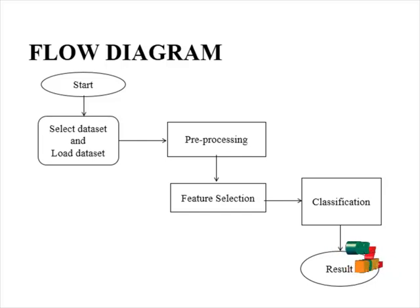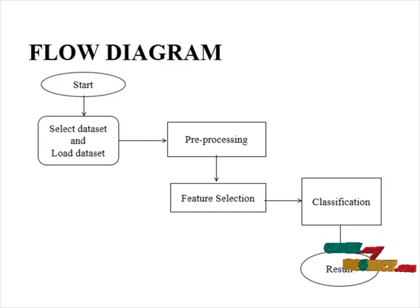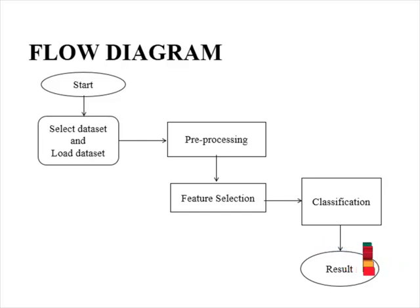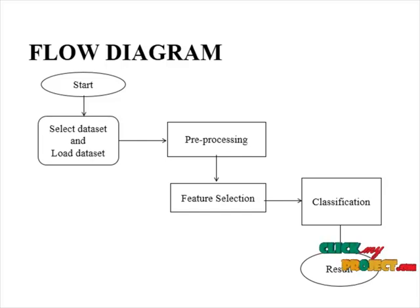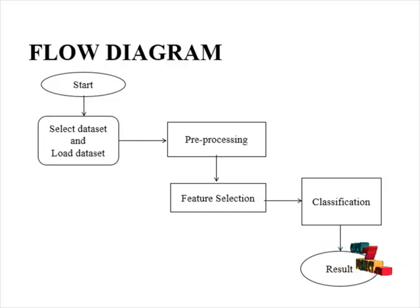In pre-processing we need to clean our dataset. In the cleaning step we need to check for missing values or null values in our dataset. If it contains any missing or null values, we need to replace those missing or null values with a unique value of zero. After that it processes into feature selection.